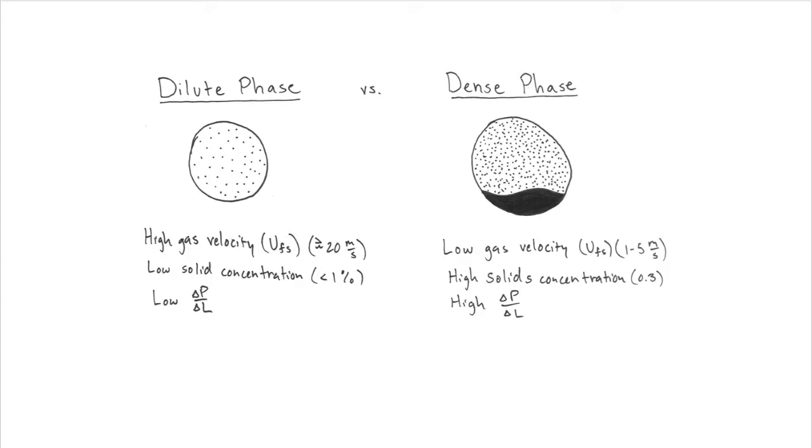In dilute phase transport, the forces between the fluid and the particles dominate, which cause a low pressure drop per length of transport pipe.